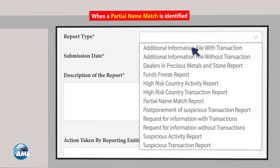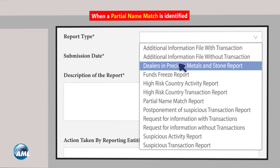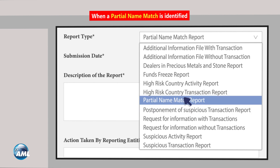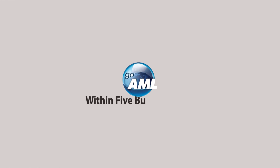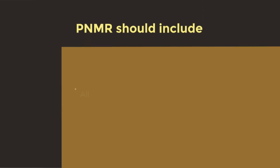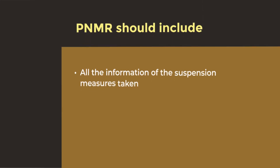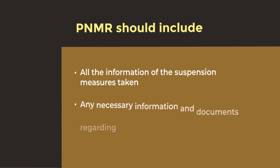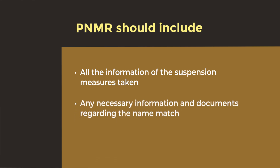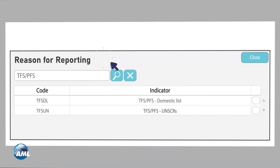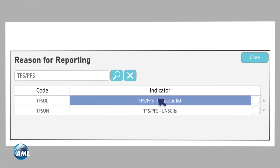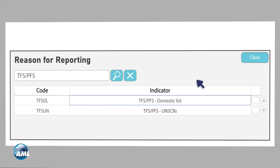Additionally, when a partial name match is identified, it is also an obligation to report it by submitting a Partial Name Match Report, or PNMR, through the GoAML platform within five business days. The PNMR should include all the information of the suspension measures taken and any necessary information and documents regarding the name match. Suspension measures must remain in place until further instructions are received via the GoAML platform from the Executive Office for Control and Non-Proliferation.